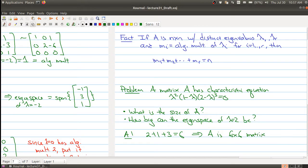So I haven't even seen A, but I know that this is the characteristic equation. It has to be a 6 by 6 matrix.